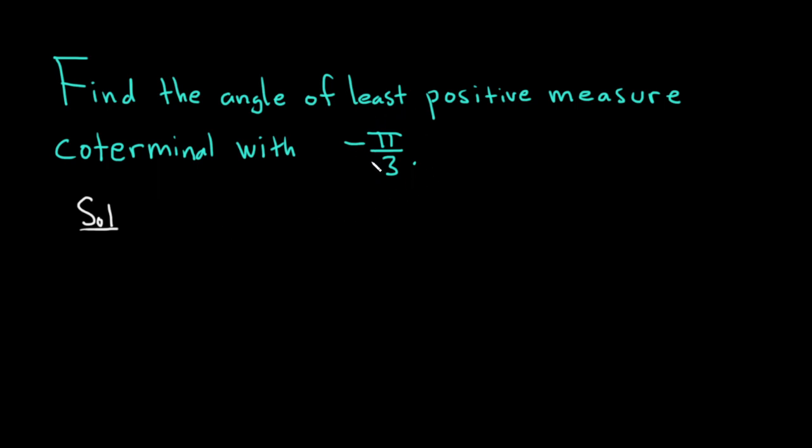In this problem we have radians, so we have to find the angle of least positive measure, so the smallest angle that's coterminal with this one.